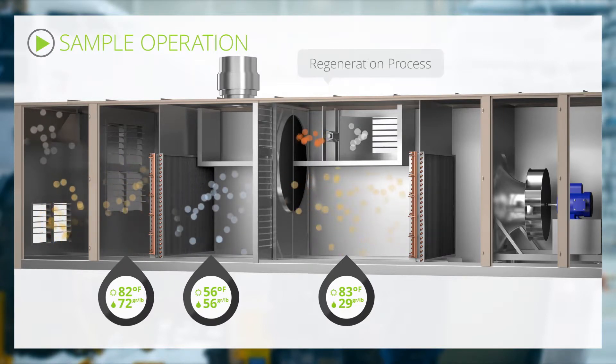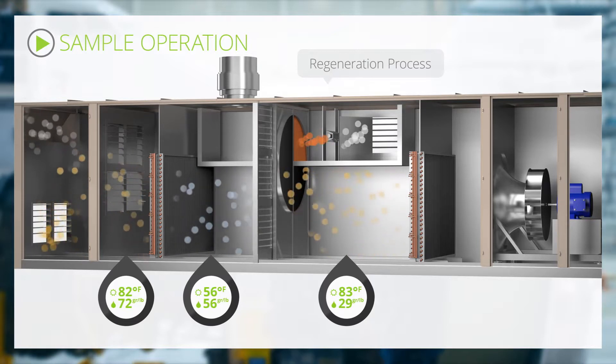Simultaneously, regenerative air is drawn through the natural gas-fired burner, heated and used to dry the absorbed moisture in the wheel before being exhausted out of the unit.